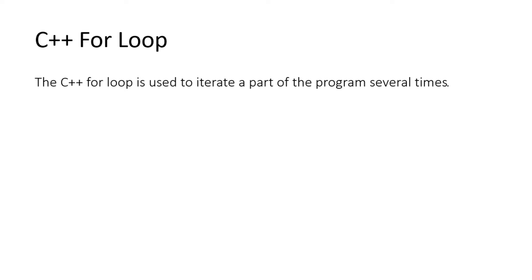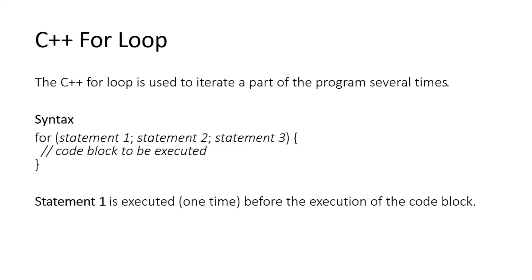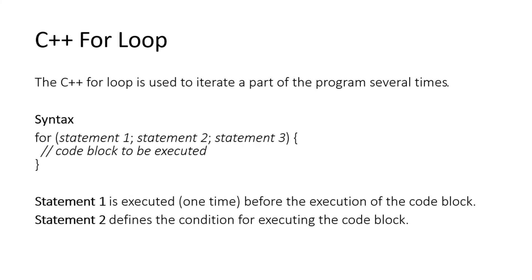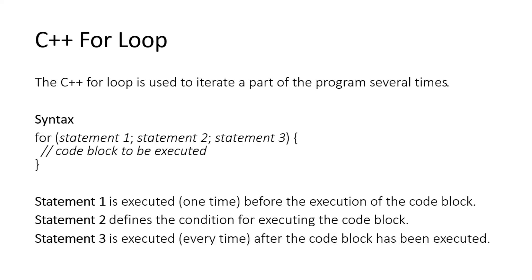The C++ for loop is used to iterate a part of the program several times. The syntax is: for(statement 1; statement 2; statement 3) block execution. Statement 1 — int i = 0 or 1 — executes one time before the execution of the code block, this is the initialization. Statement 2 defines the condition for execution of the code — condition check. Statement 3 executes every time after the code block executes.